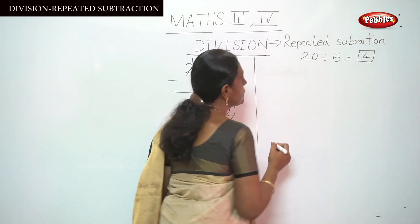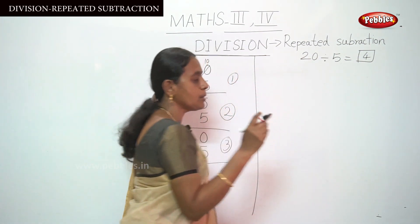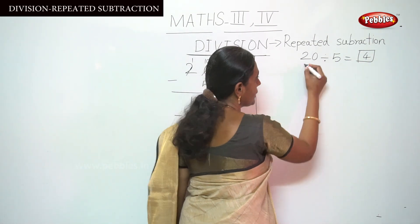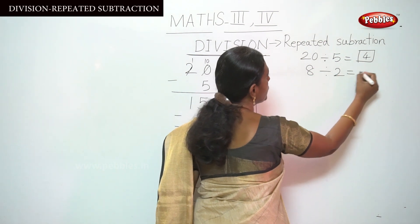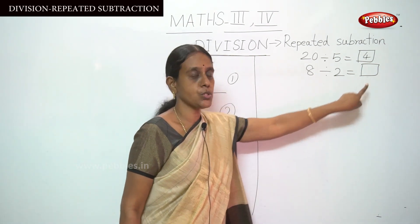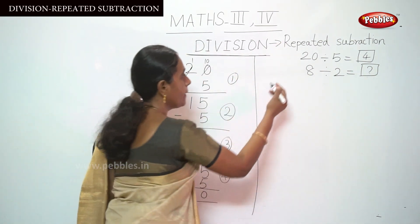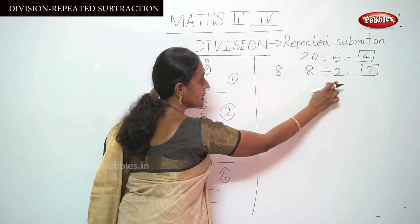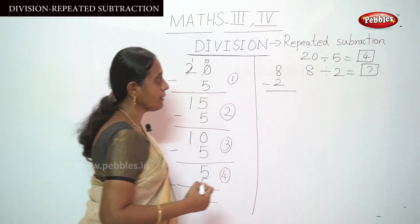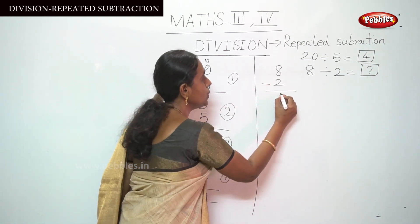Again, you can take any table — 3 table, 6 table, 2 table, or anything. The next sum is 8 divided by 2. Find this quotient. How to do repeated subtraction — I am going to explain. Put 8 and subtract the divisor: 8 minus 2, that is 6.